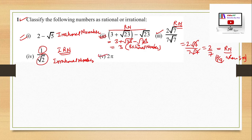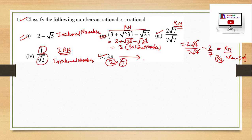Fifth part: 2π. This is 2 into π. Since 2 is a rational number and π is an irrational number, the product of a rational number and an irrational number will be an irrational number. So 2π will be an irrational number.